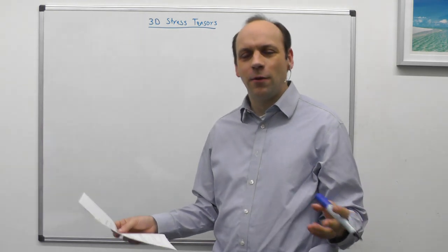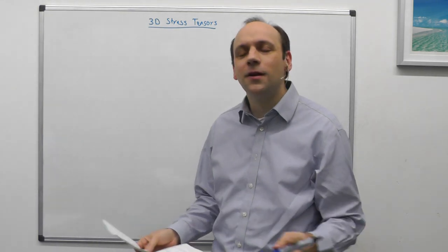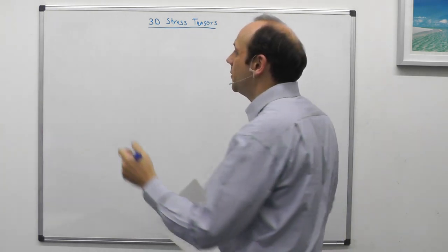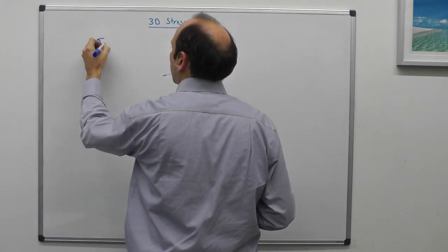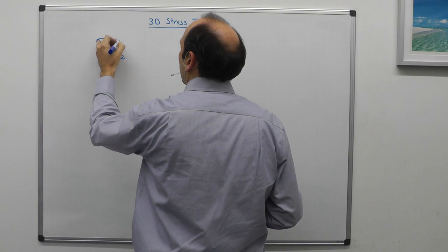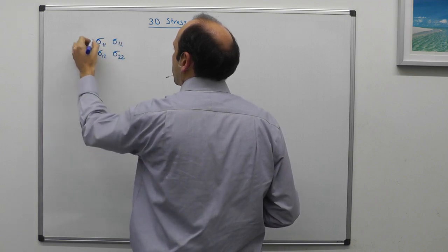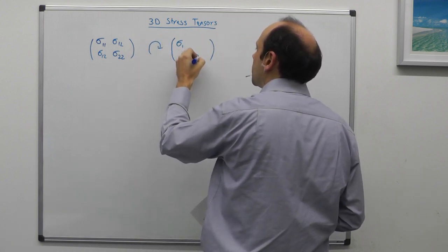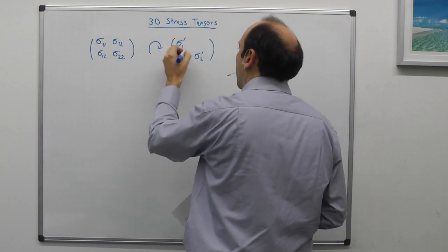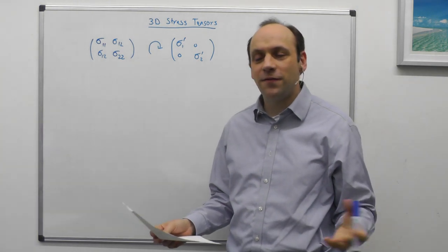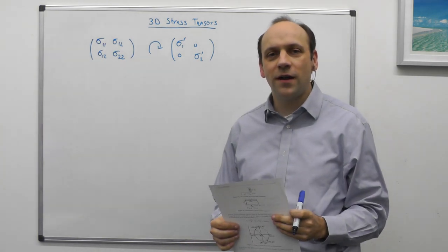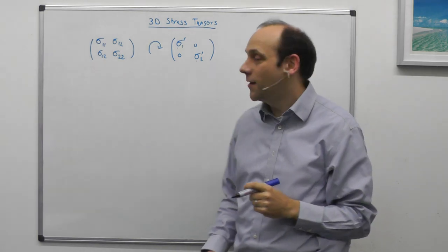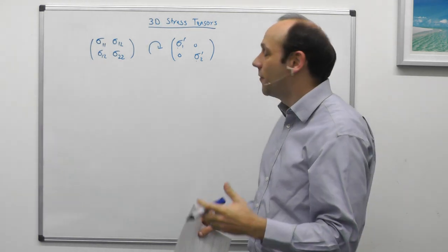Let's first think about what we've done already on eigenvalues and eigenvectors. In 2D, a general stress tensor can be rotated to find a new stress tensor with principal stresses sigma 1 and sigma 2 and no shears. We've found a diagonal matrix with no off-axis terms — that is, the matrix with eigenvalues in it — and the eigenvalues are in fact the principal stresses.